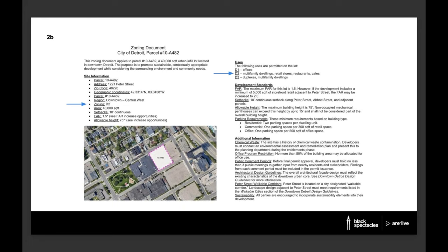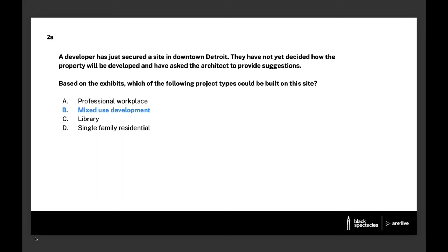D2 is a code for a type of zoning described in more detail later in the document. Under the uses section, we see that D2 includes multifamily residential, retail stores, restaurants, and cafes. A mixed-use development could include all the program types listed in D2, mixing commercial with residential — making B the correct answer. The incorrect answers: library is a civic program type not listed under D2; single-family residential is also not listed under D2; and professional workplace would be considered office, which is listed under D1 but not D2.